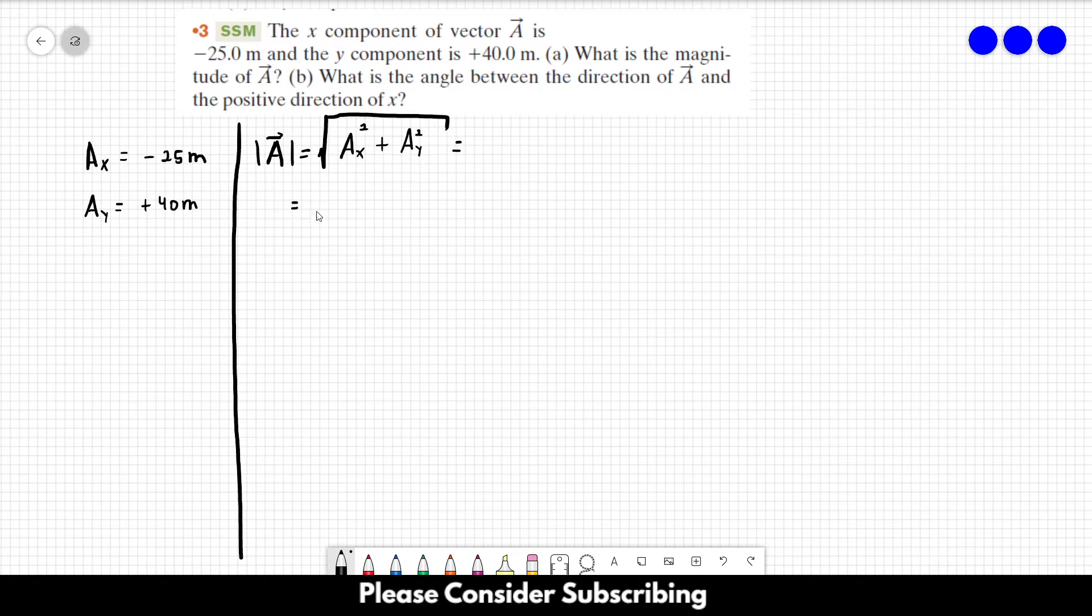And in this case, the x component is minus 25 and the y component is 40. So, if you do this calculation over here, you would find 47.2 meters. So, this is the answer of letter A.